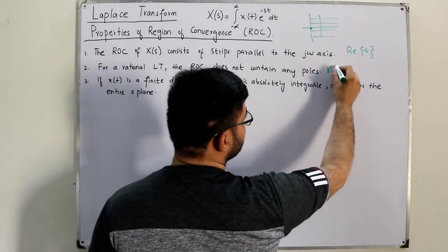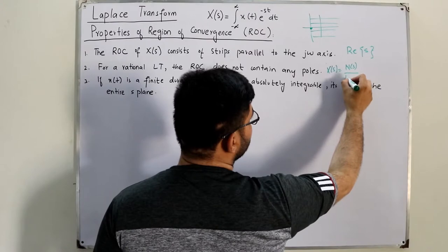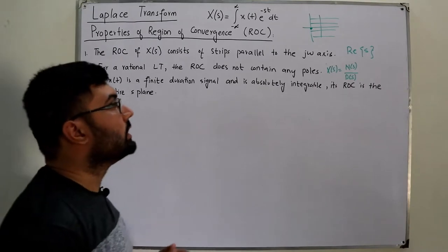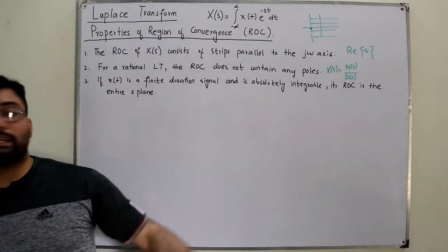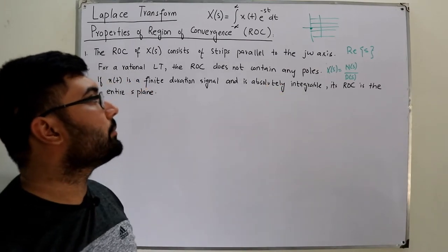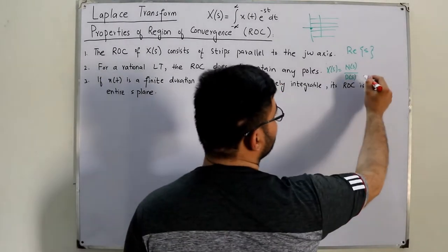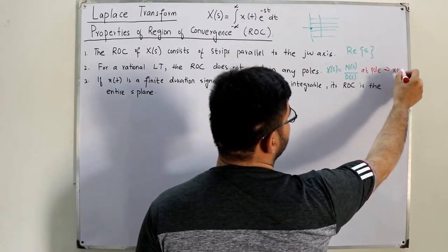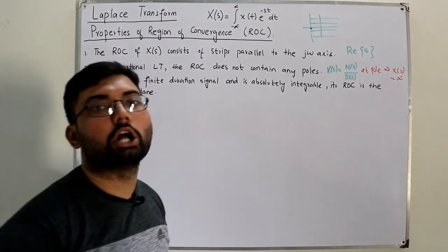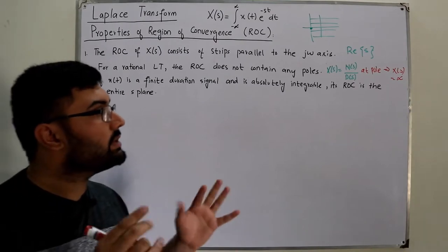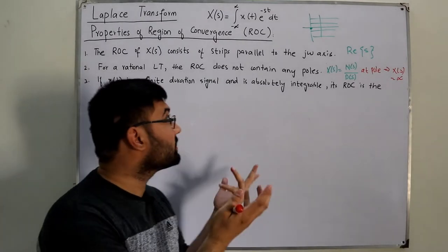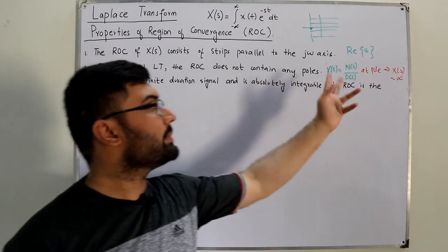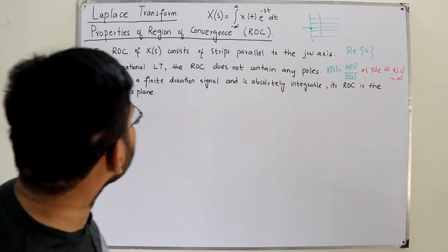the ROC does not contain any poles. Poles are the roots of the denominator polynomial. They do not contain any poles because at poles the Laplace transform would be infinite — it would not converge. So the pole cannot be a value for which the Laplace transform converges, meaning the pole cannot be included in the ROC.